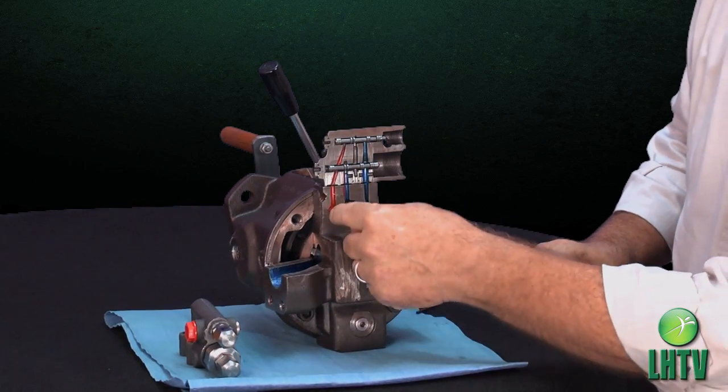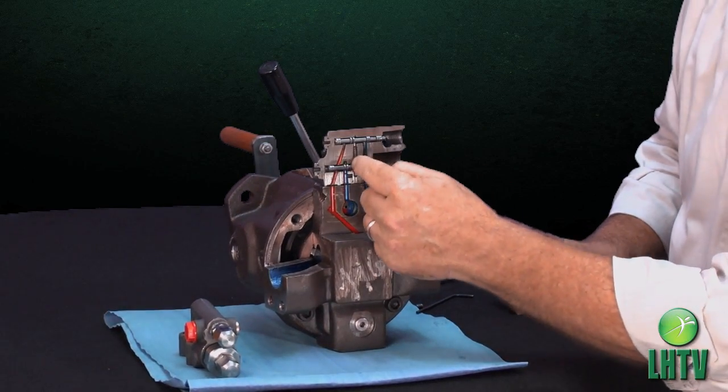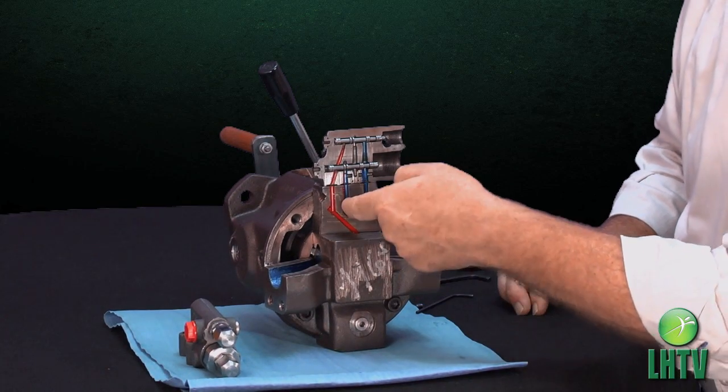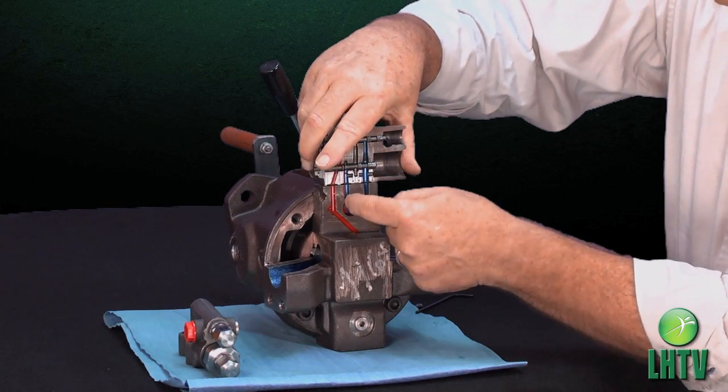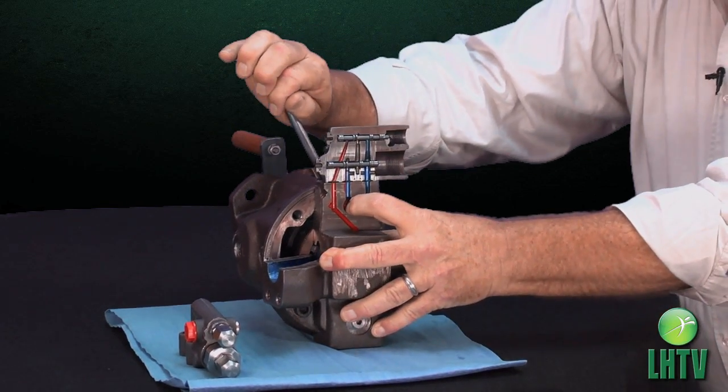You can see that we take pressure from the outlet of the pump, bring it up to the control. It goes down into the stroking piston. When the pressure overrides the spring and ports it, which moves the pump to compensate.